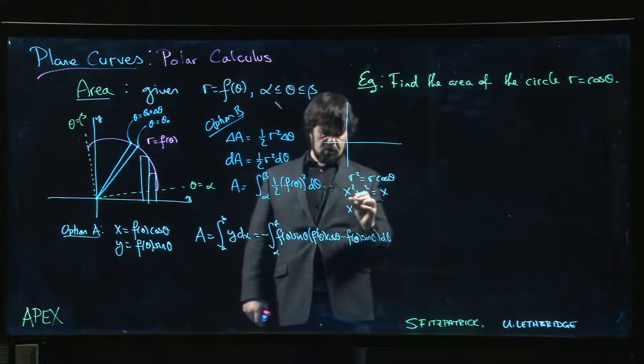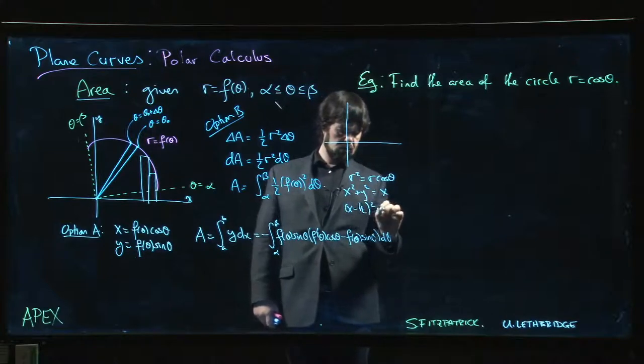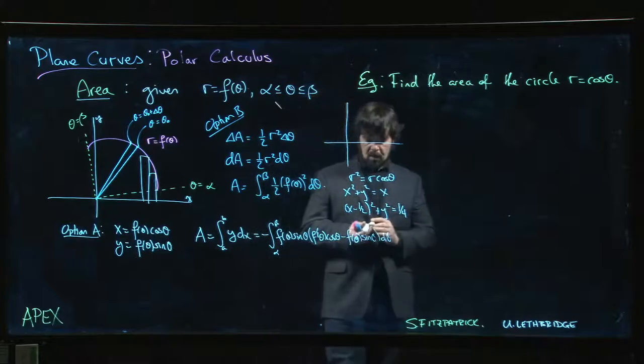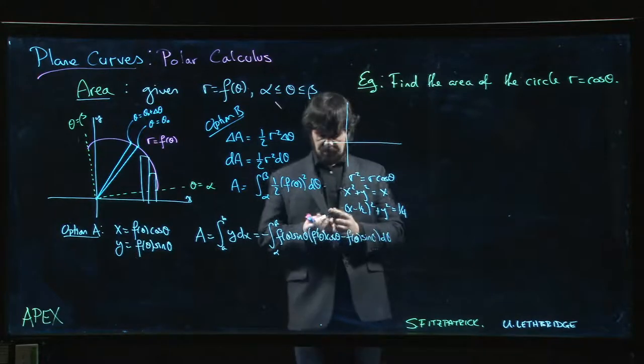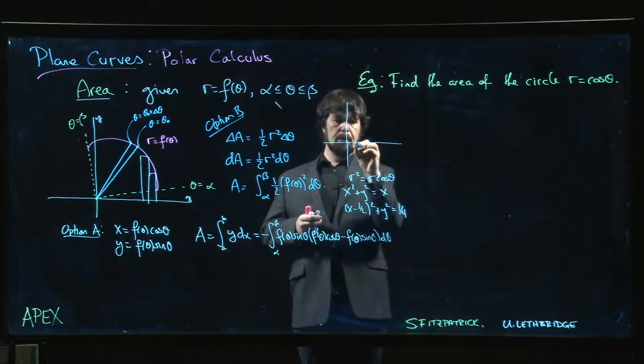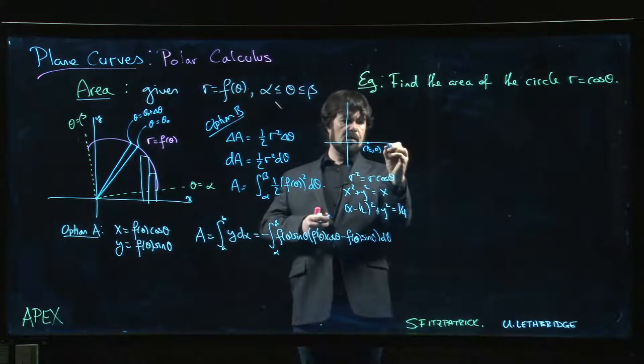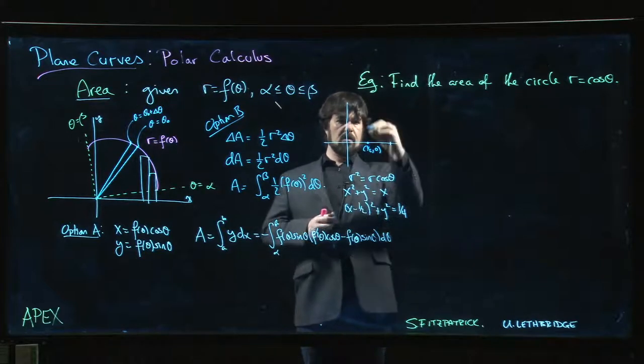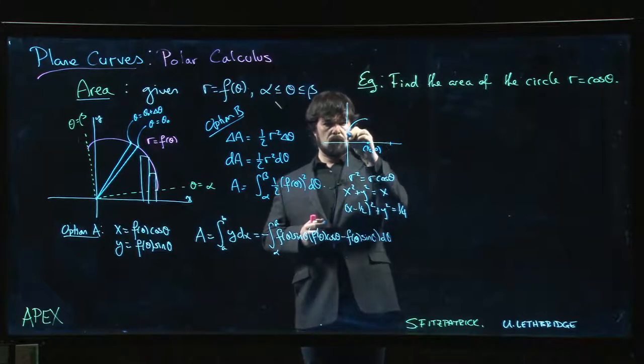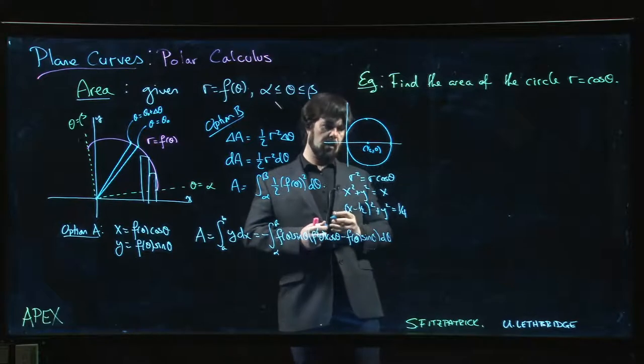You move the x over, you complete the square, and you get an equation that looks like that. So it's a circle of radius 1 half centered at the point 1 half, 0. So there's 1 half, there's 1. So we go up 1 half, we go down 1 half, and we get our circle.